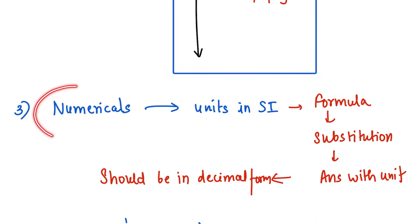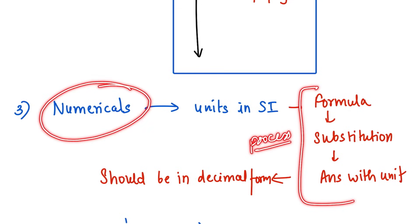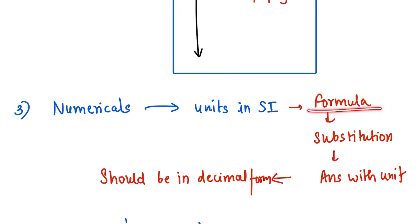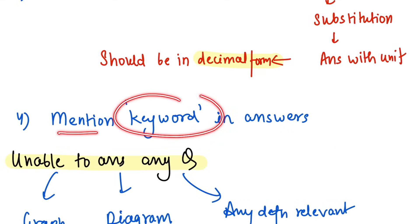Third, for numericals — please mention the units in SI. If they have not asked you to convert to any other unit, keep it in SI and convert all given units to SI before solving. The correct process is: first write the formula, then substitute values, then write the answer with the unit in decimal form — do not leave it in fraction form. This is clearly mentioned by the council.